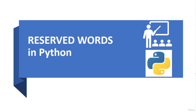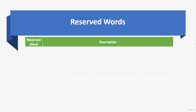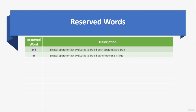Think of Python as a language you use to communicate with the computer — just like any other language, Python has its own words and grammar rules. In Python, some words have specific meanings and purposes reserved for the language itself. Reserved words in Python are keywords that have special meanings and cannot be used as identifiers such as variable names or function names. Now let's cover the reserved words: 'and' is a logical operator that evaluates to true if both operands are true; 'or' evaluates to true if either operand is true; 'not' negates the value of its operand.